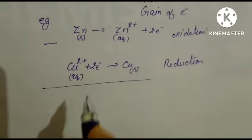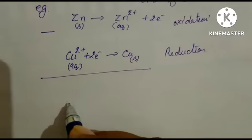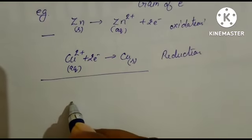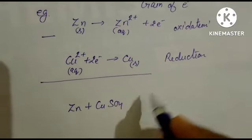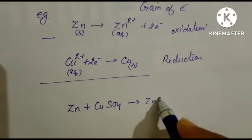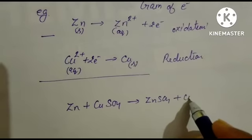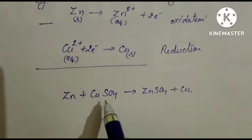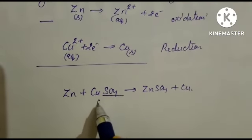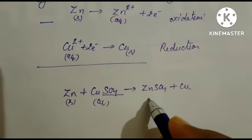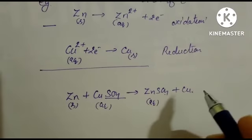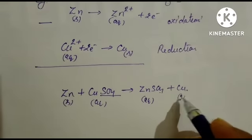We just use this as zinc plus copper sulfate yields zinc sulfate plus copper. This is an aqueous solution of copper sulfate, salt solution, zinc is solid. In this, zinc is in aqueous solution of its salt solution and copper is in solid form.